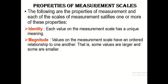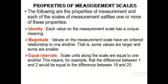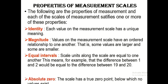Each of the scales of measurement must have certain characteristics — at least one of the four properties. Identity has to do with the uniqueness of the number attached to the measurement. Magnitude means the values on the measurement scale have their own magnitude and we can use that to make an order — that this is more than that, or less than that. Another property is equal interval: scale units along the scale are equal to one another, so the difference between 1 and 2 is equal to the difference between 19 and 20.